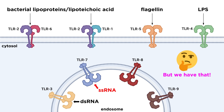Now of course, you might be thinking, mammalian cells have single-stranded RNA too. This is absolutely true, and this is where it's important to remember that TLR location is key. Mammalian cells do have single-stranded RNA in the nucleus and the cytoplasm, but not in the endosome. If there is single-stranded RNA in the endosome, it's usually the result of phagocytosing single-stranded RNA viral particles.